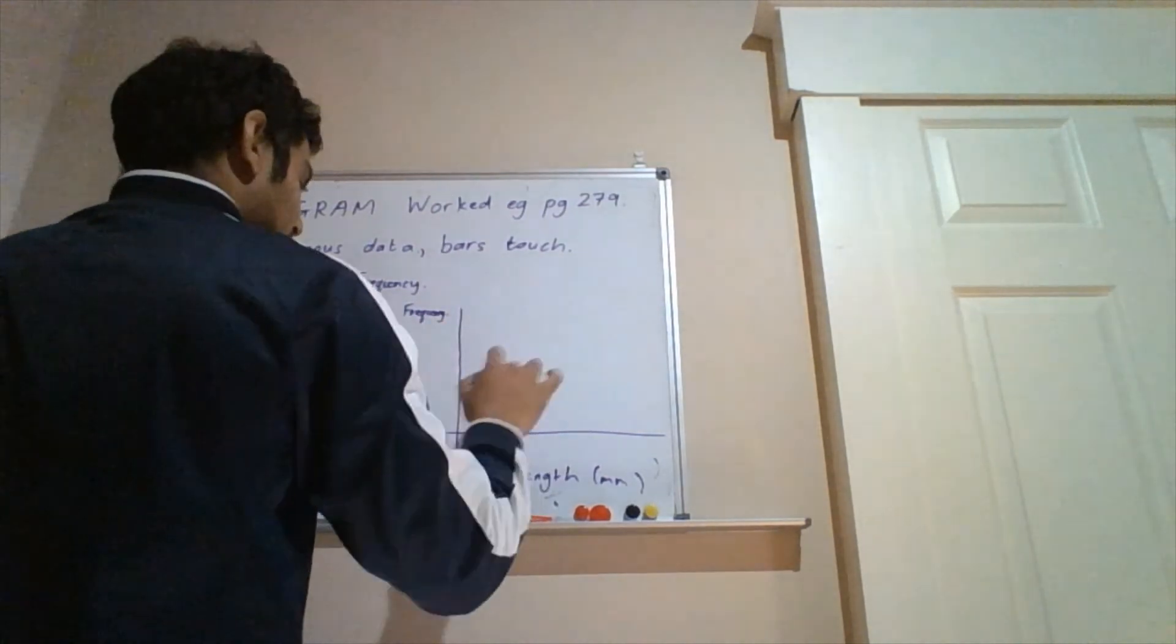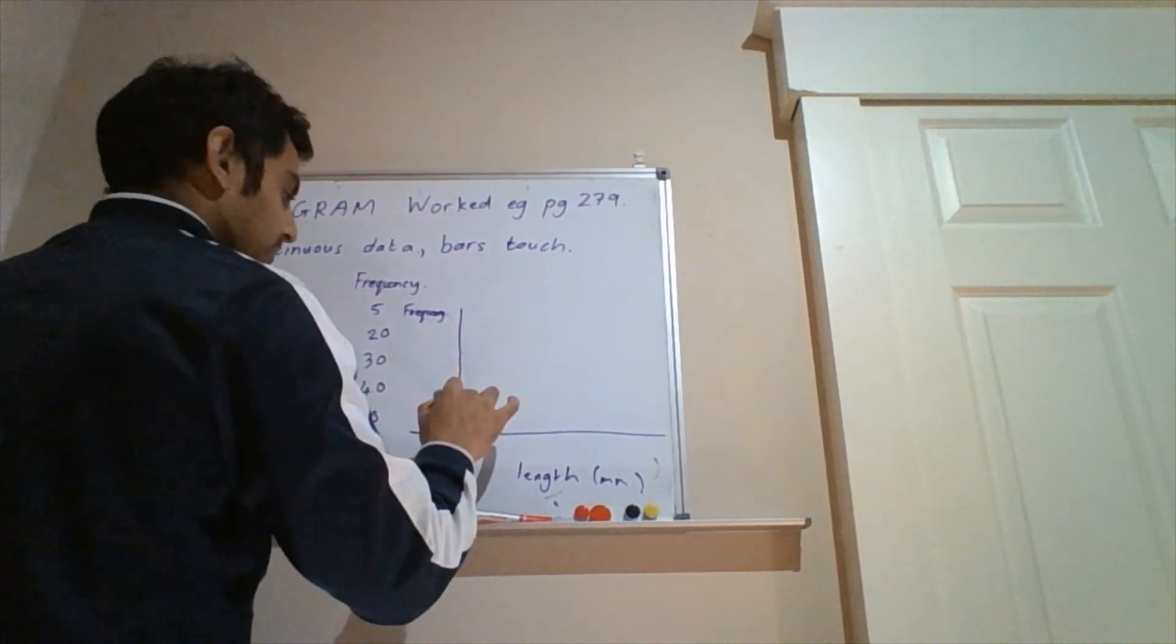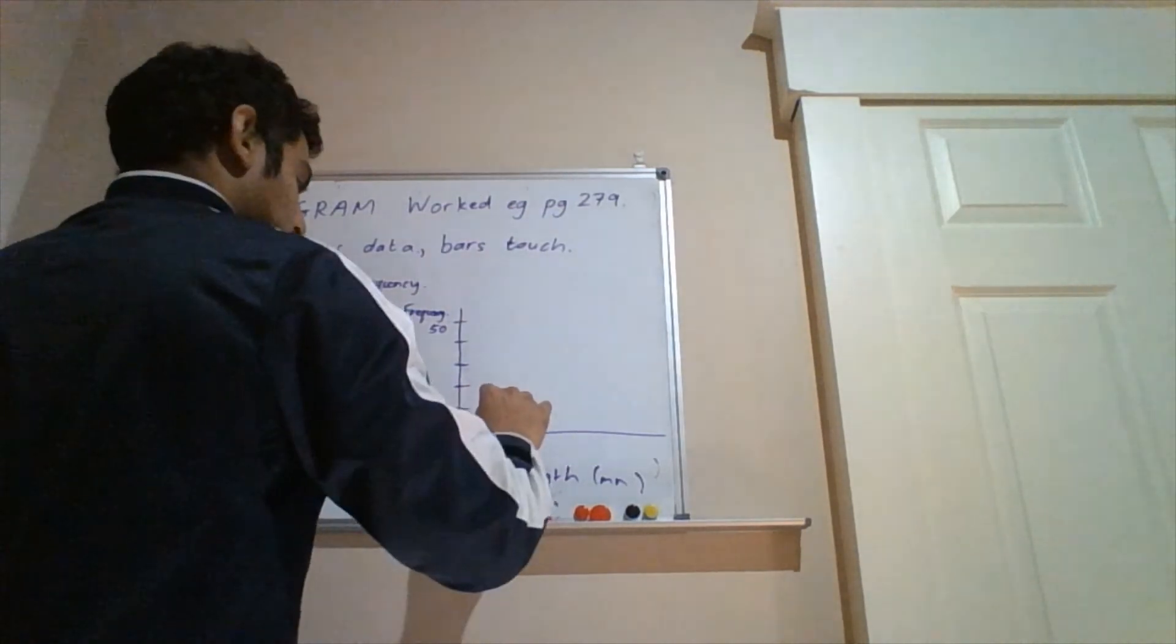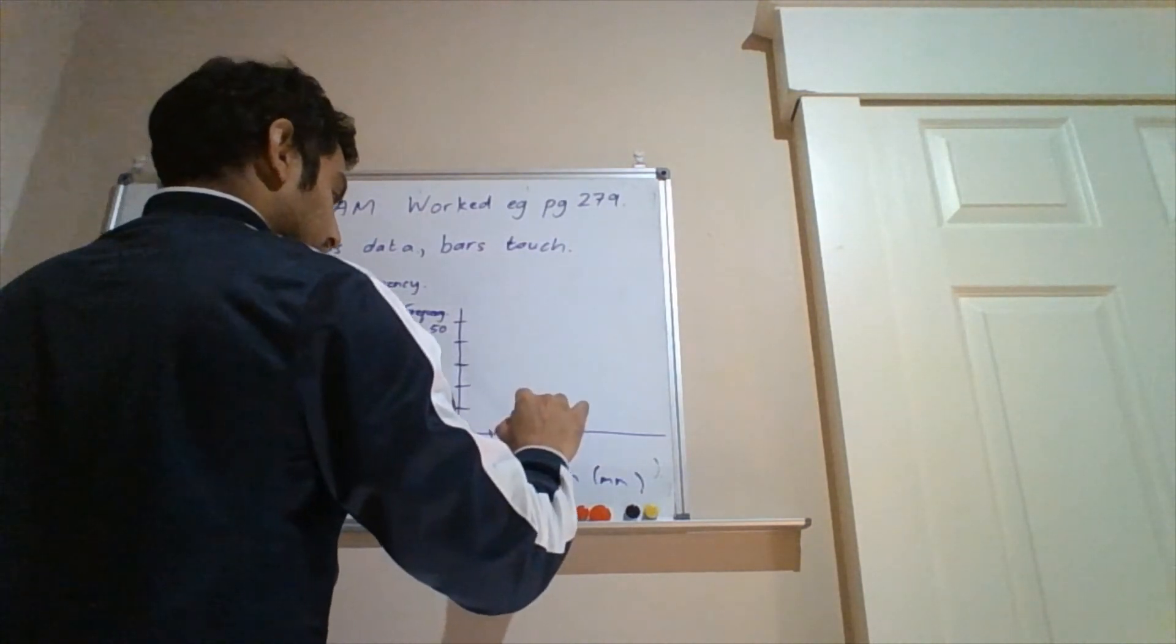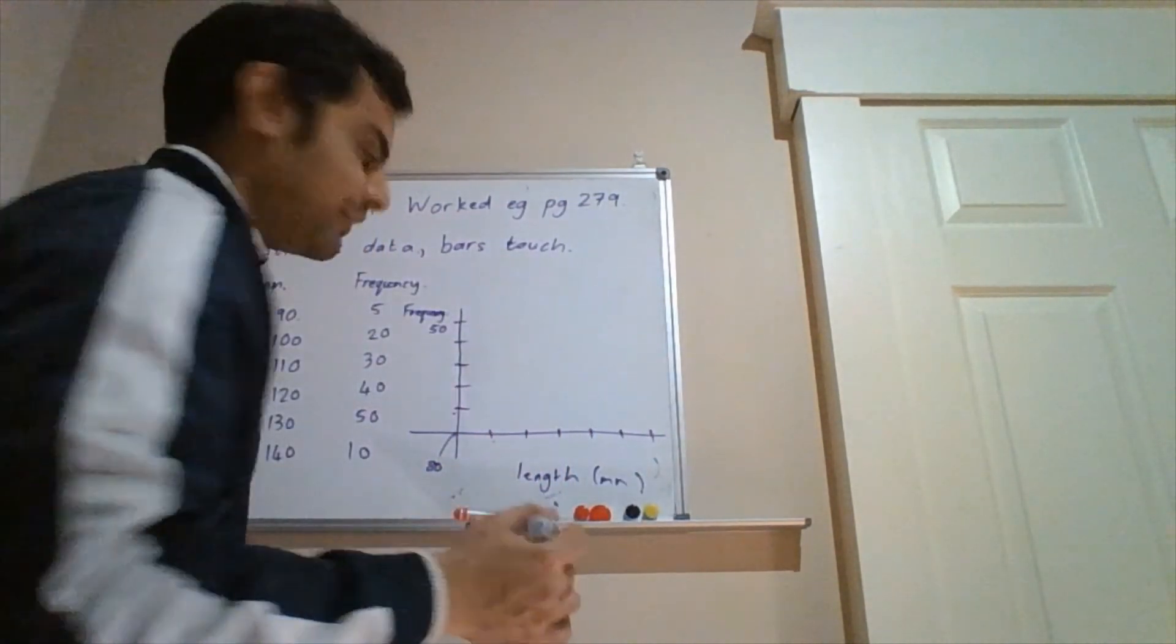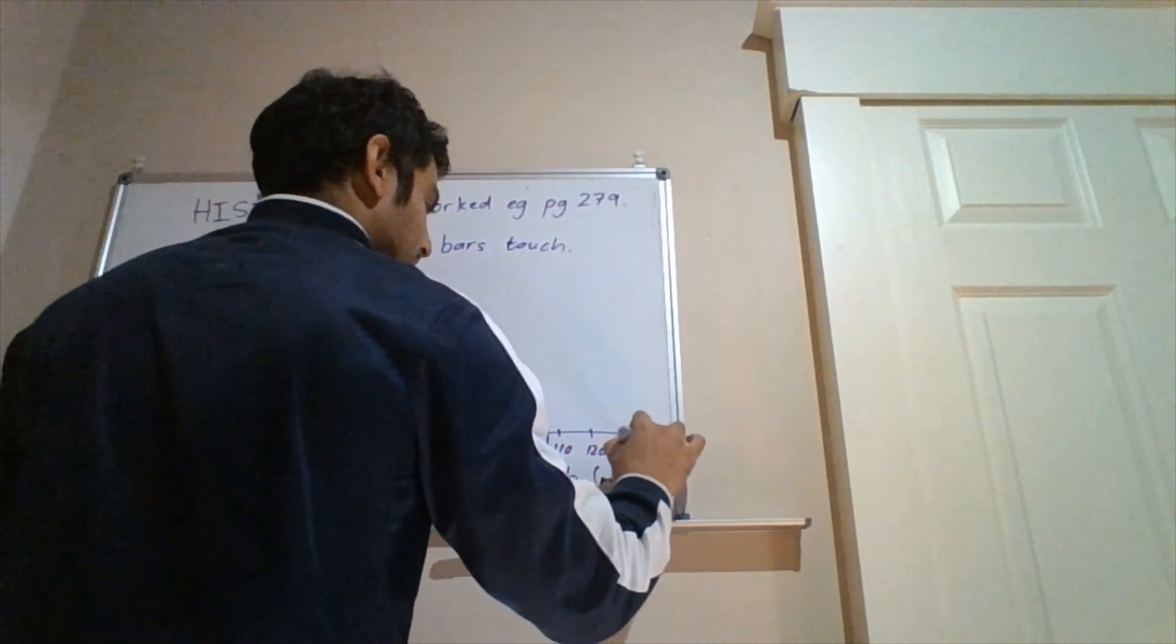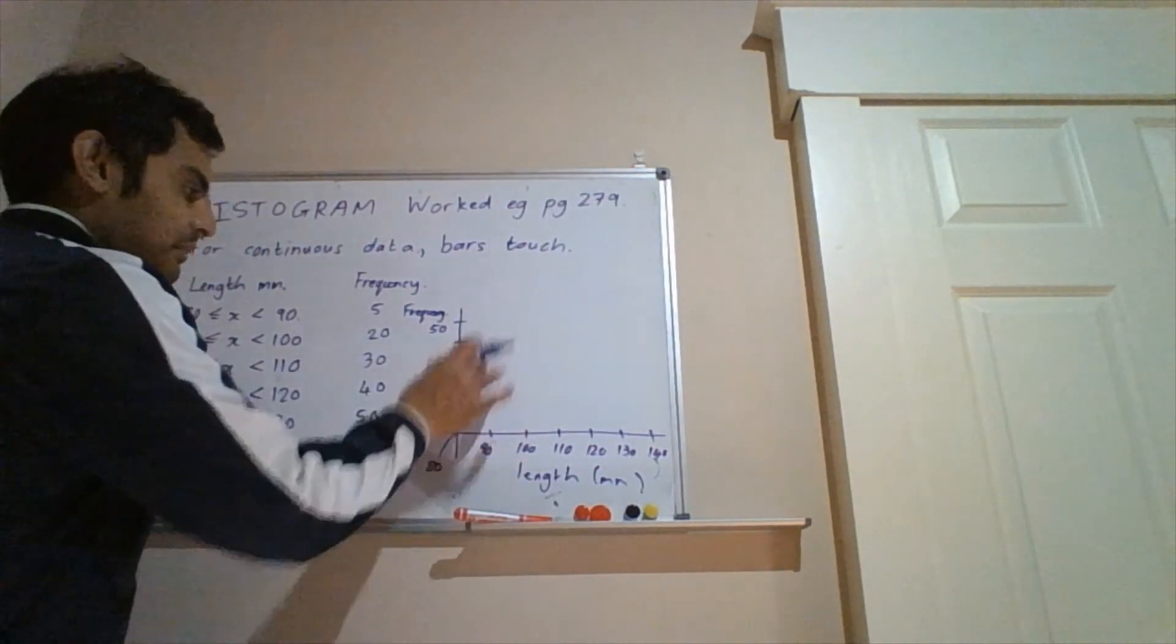Our frequency is discrete. We can only count the fish one by one, but their lengths are continuous. That's why we need the histogram. So the frequency goes up to 50. So I'm going to go 10, 20, 30, 40, 50. And our lengths go from 80 to 140. So I'm going to go 80 over here at the origin. Then it will go 90, 100, 110, 120, 130, 140. And you can fill that in if you want. Or you can just fill in the last one. I'll fill them all in. So we've got 90, 100, 110, 120, 130, 140. Okay, so I've drawn them next to each other, and our bars are going to touch.